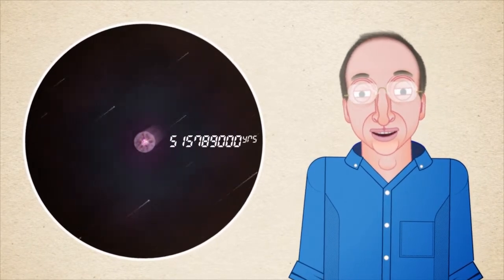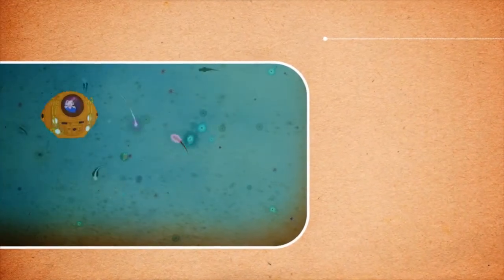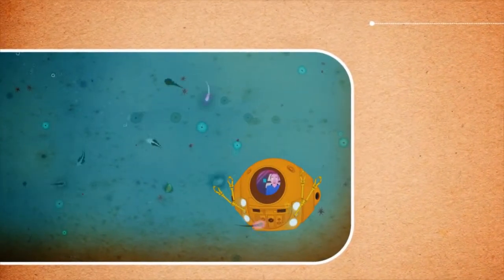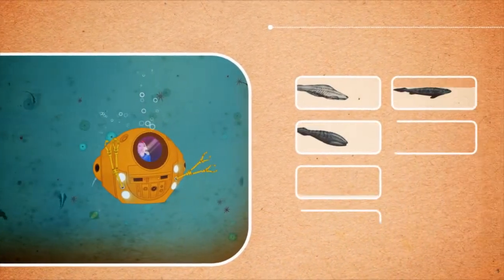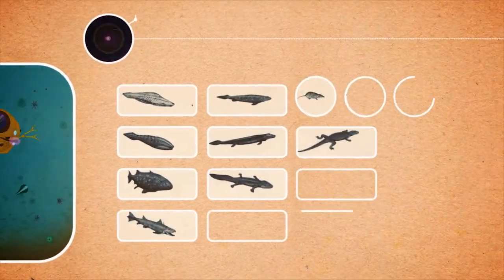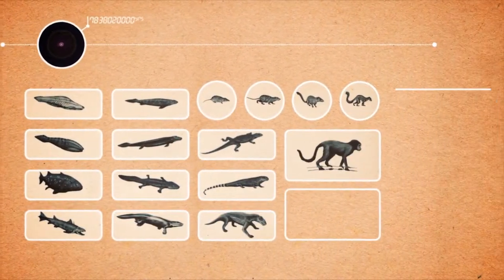That proto-life evolved into more complex life with multicellular organisms that swam around these oceans, and eventually into life that crawled out onto the surface, evolved into different species, eventually mammals,